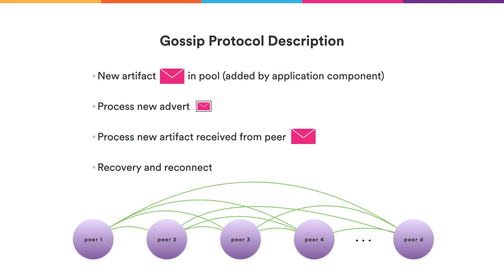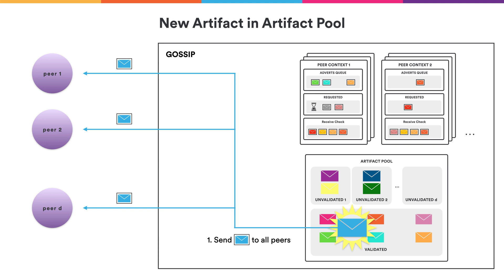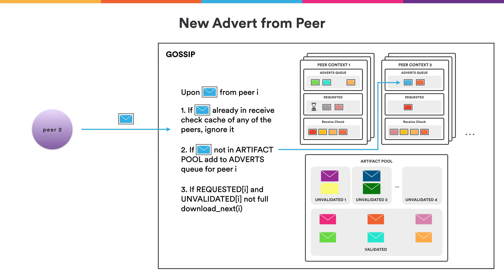These are the main events that the GOSI protocol handles: a new artifact added locally by an application component, a new advert received from a peer, a new artifact received from a peer, and recovery and reconnection issues. For the first case — a new artifact added locally — GOSI creates an advert and sends it to all its peers in the overlay network. When a node receives an advert from a peer, it first checks whether the corresponding artifact was already downloaded or created locally. If not, it adds it to the adverts queue of the sending peer. If there is enough space for this peer in its unvalidated section, we call DownloadNext for this peer to request the next artifact based on the priority function.